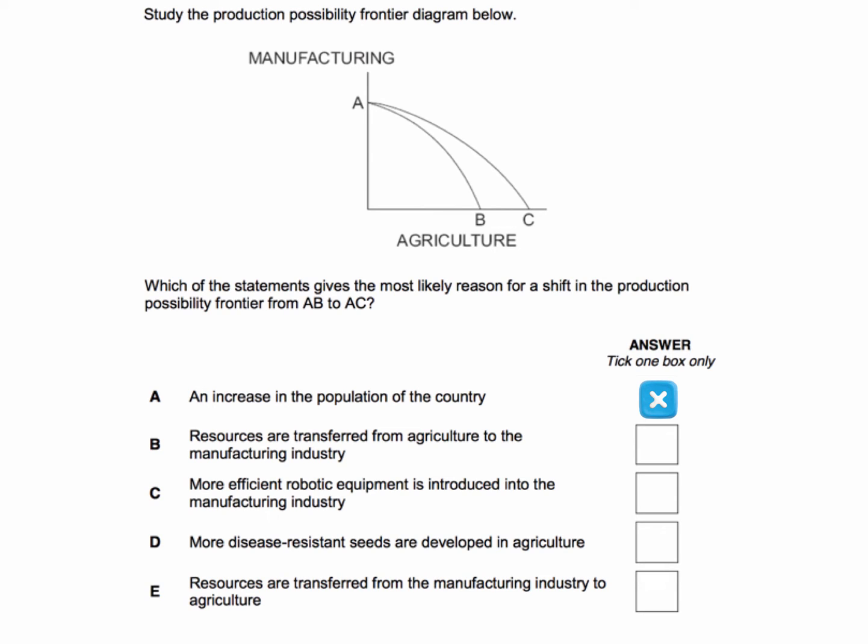Answer B: resources transferred from farming to manufacturing — a resource transfer is a movement along the PPF and not a shift in the PPF, so B is wrong as well.